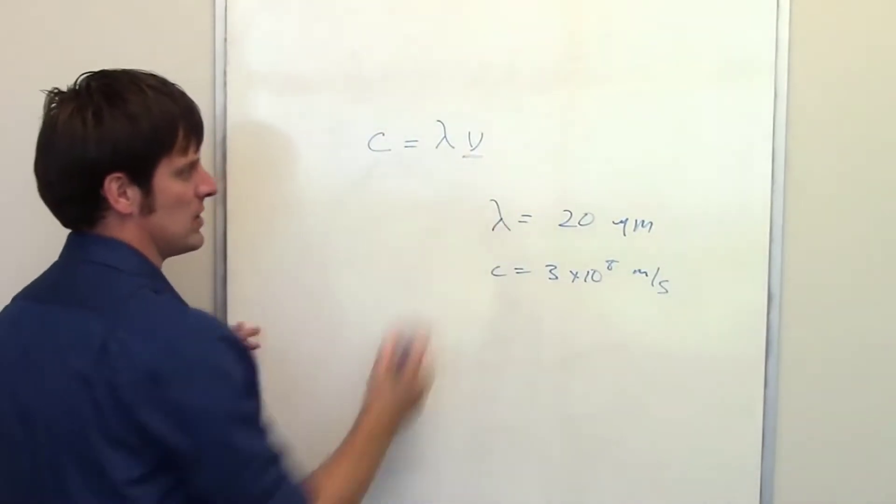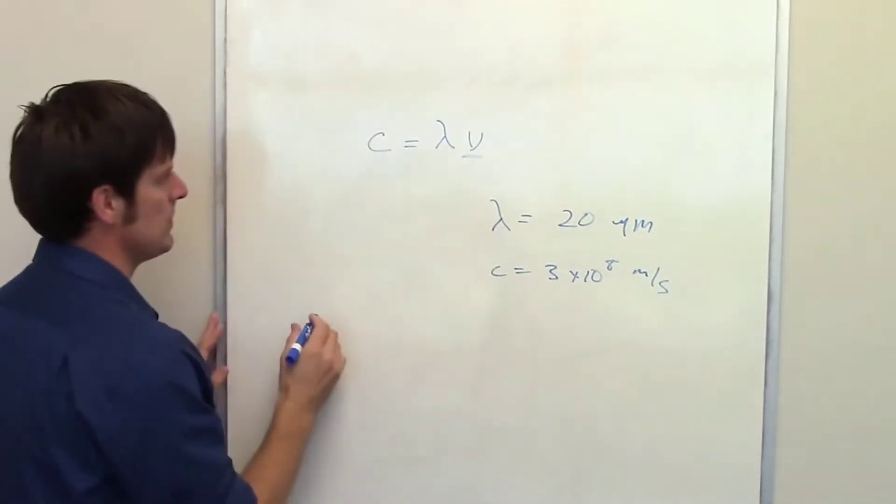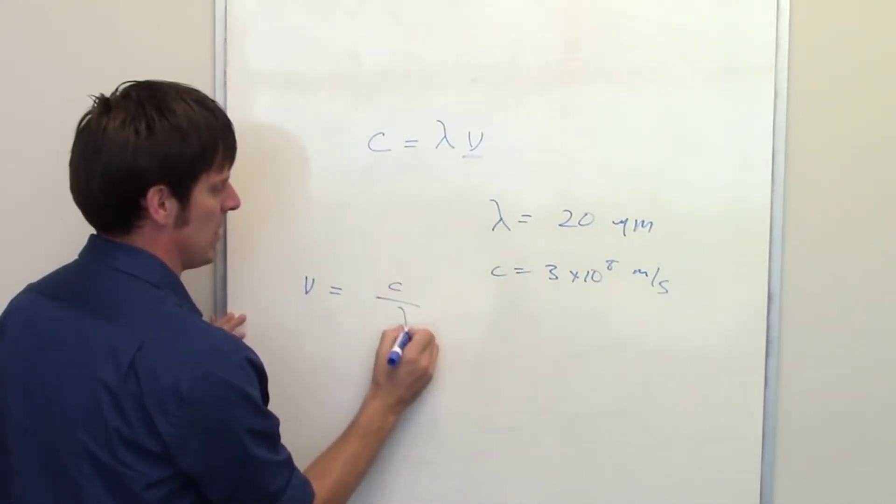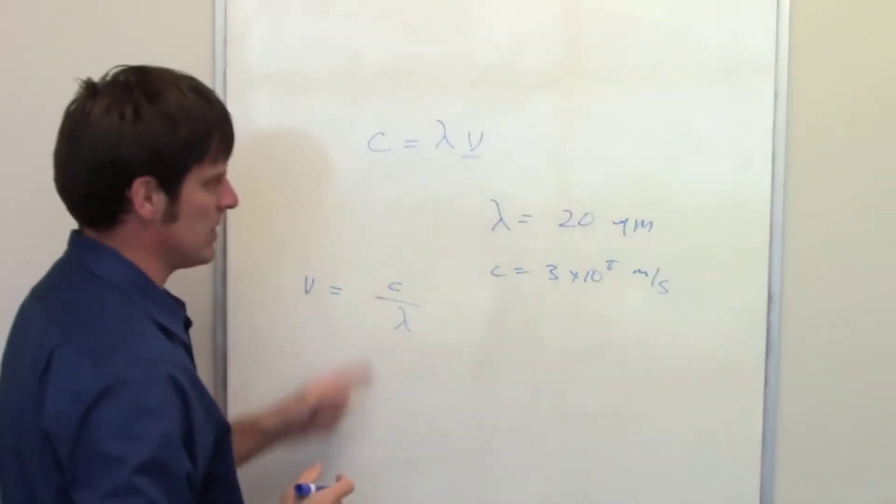What is our frequency, the unknown variable we're trying to determine? Well, it's going to be equal, using the magic of algebra, to the speed of light divided by the wavelength. The units on these have to match, though.